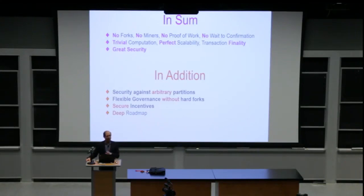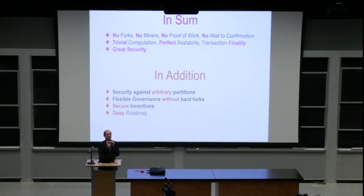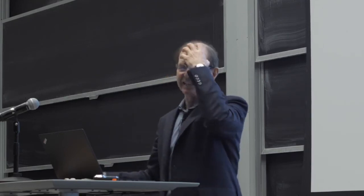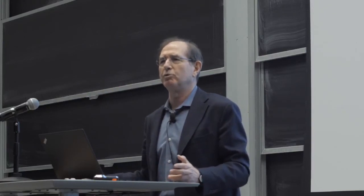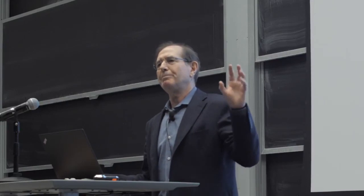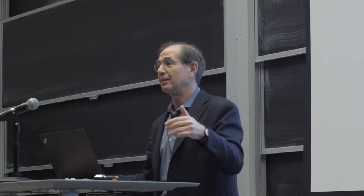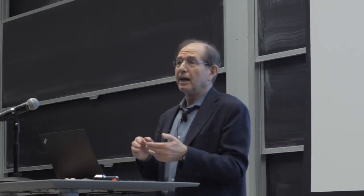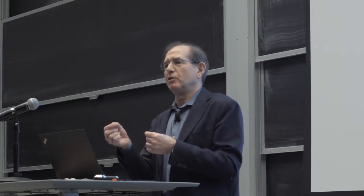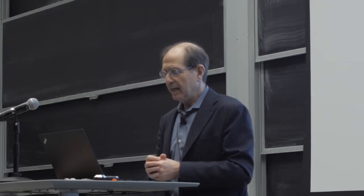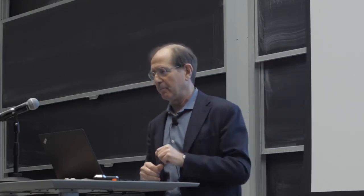Algorand also allows flexible governance without hard forks. I compare cryptocurrency to an ocean liner on autopilot — it's very hard to decide which coordinates to navigate before you know where the icebergs and obstacles are. To be alive means to change. In Bitcoin, if you want to double the block size, you split the currency and the community. In Algorand, because you have the ability to propose and agree on anything, 99.9% of the time you agree on the next block, but you can also agree on new protocol rules, a new block size, a new monetary policy — you are alive, like the community you represent.